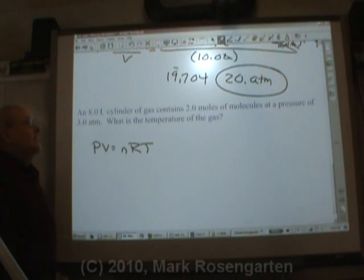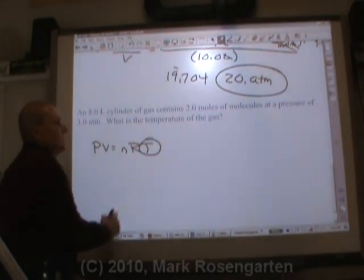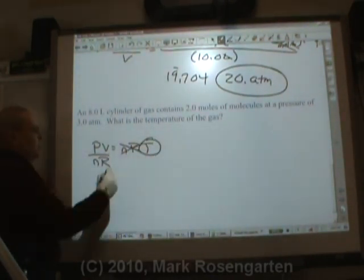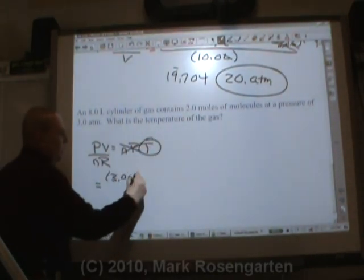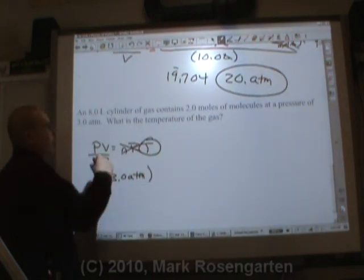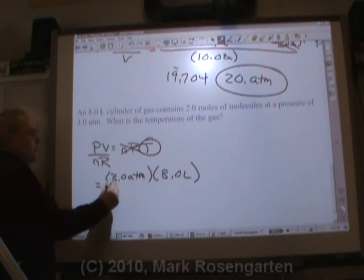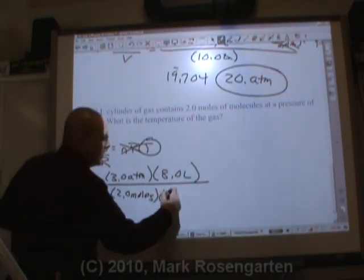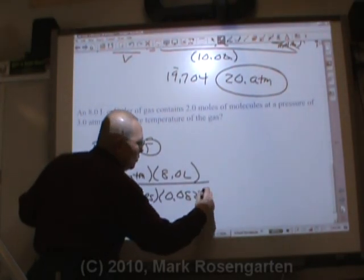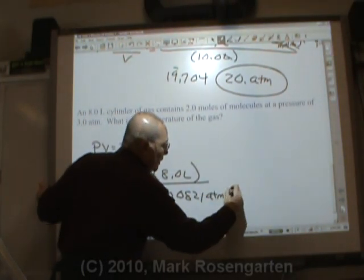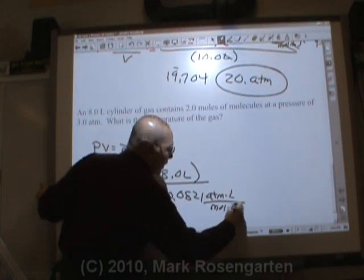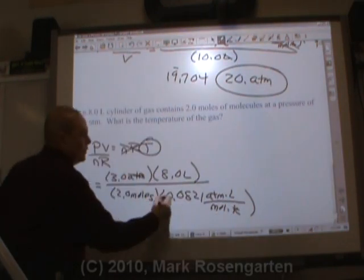An 8 liter cylinder of gas contains 2 moles of molecules at a pressure of 3 atmospheres. What is the temperature of the gas? The pressure is 3.0 atmospheres. The volume is 8.0 liters. Divided by the number of moles is 2.0, times the universal gas constant, 0.0821 atmospheres liter per mole kelvin.